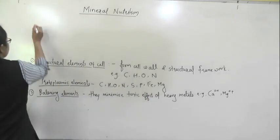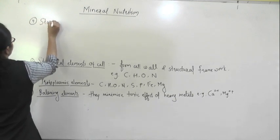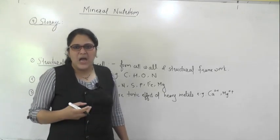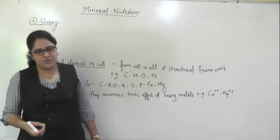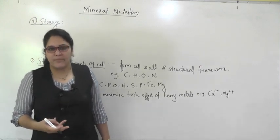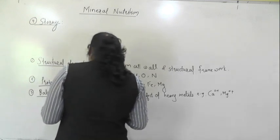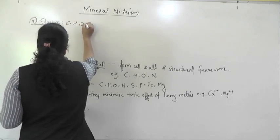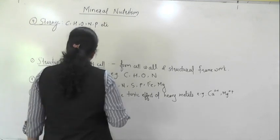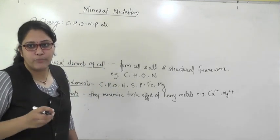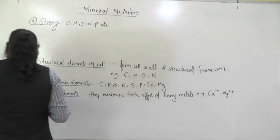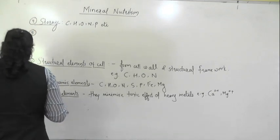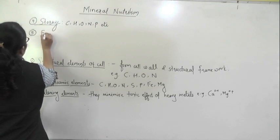The fourth function: some nutrients are involved in storage. Plants have different types of stored material — carbohydrates, proteins, fats, or lipids. These stored compounds are made up of carbon, hydrogen, oxygen, nitrogen, and phosphorus, since nitrogen and phosphorus are essential components of proteins. The fifth important role is that some nutrients act as enzyme activators.